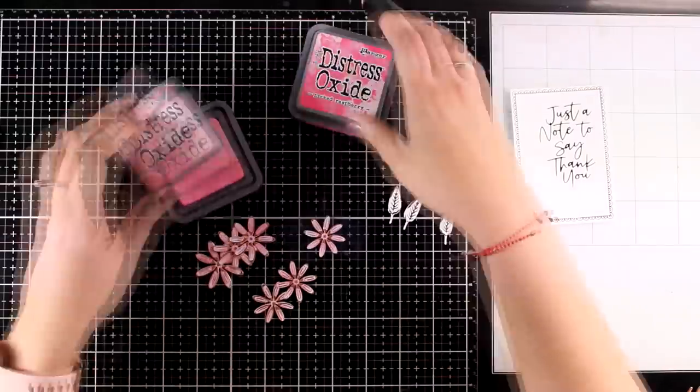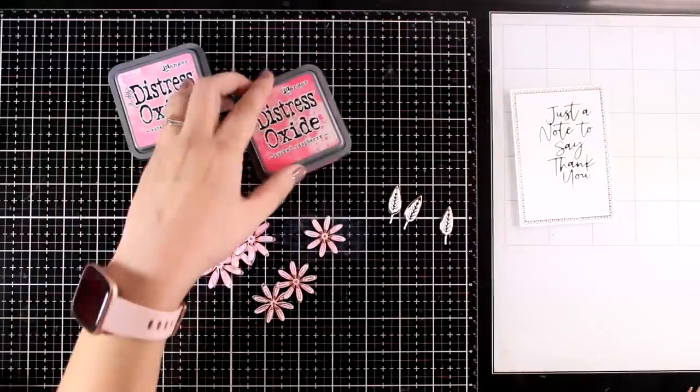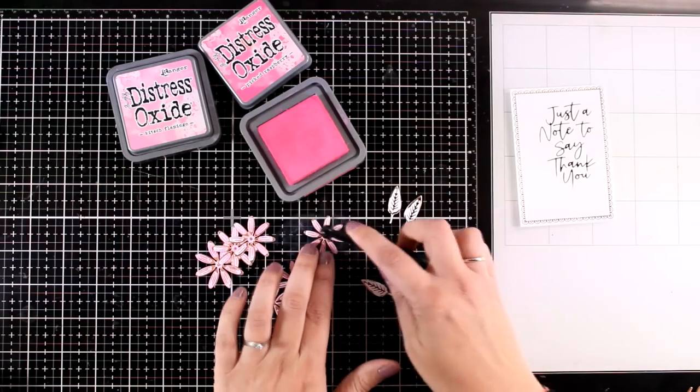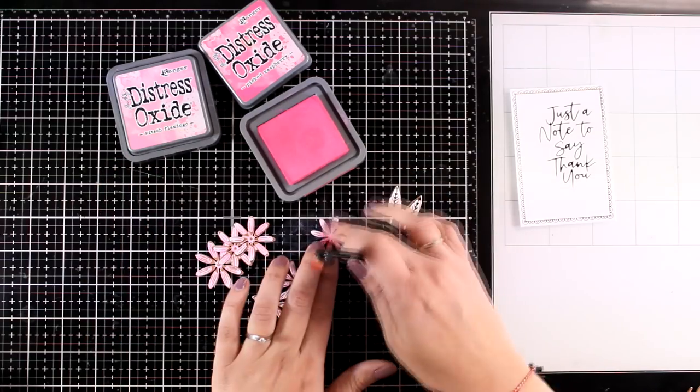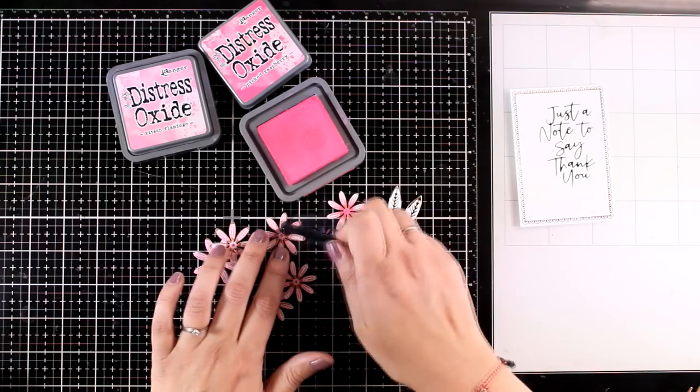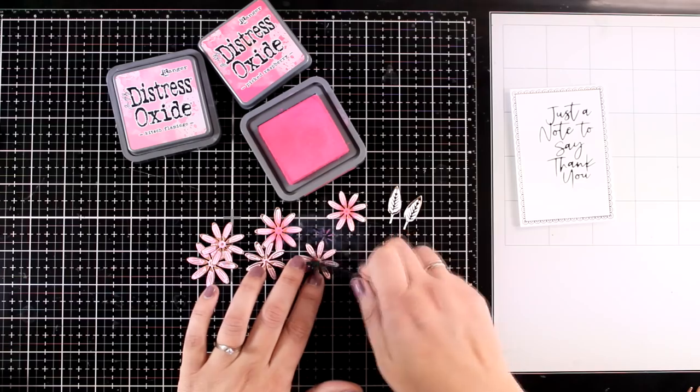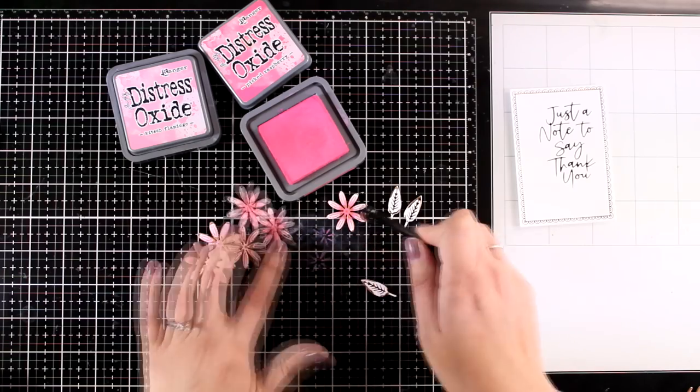For the center of the flowers I went with a slightly darker color that's Picked Raspberry. And to apply the ink I'm using one of those super tiny brushes for blending that are perfect for this job since I have perfect control of where I'm applying the ink.